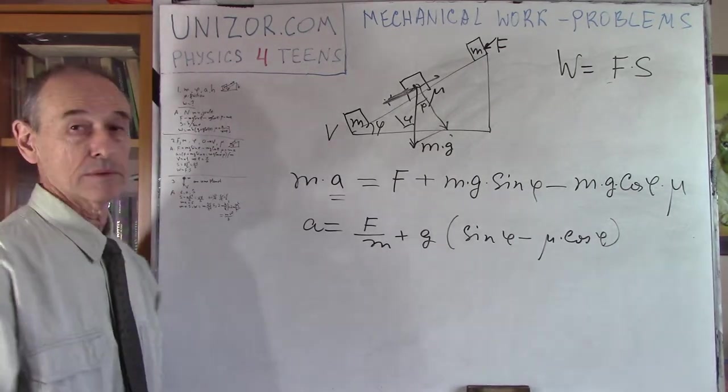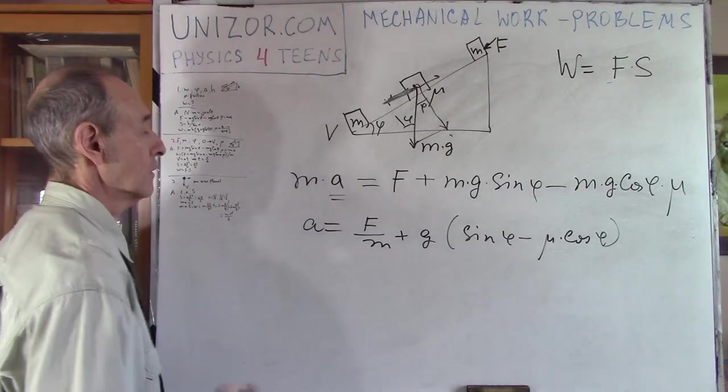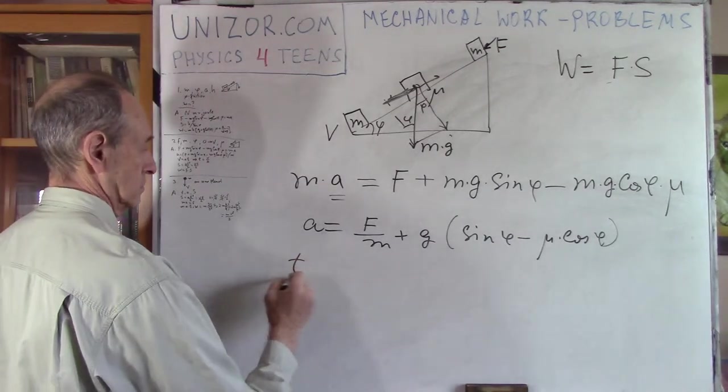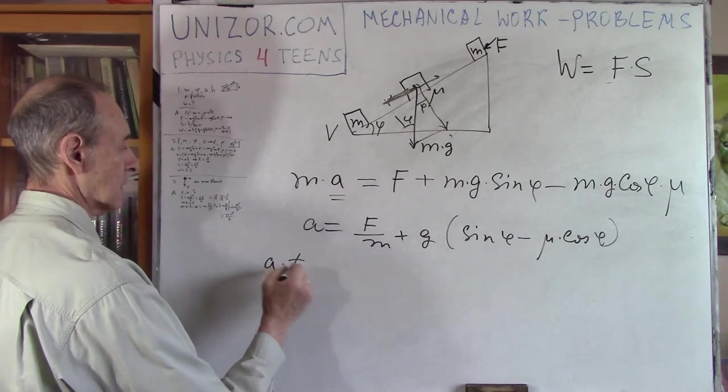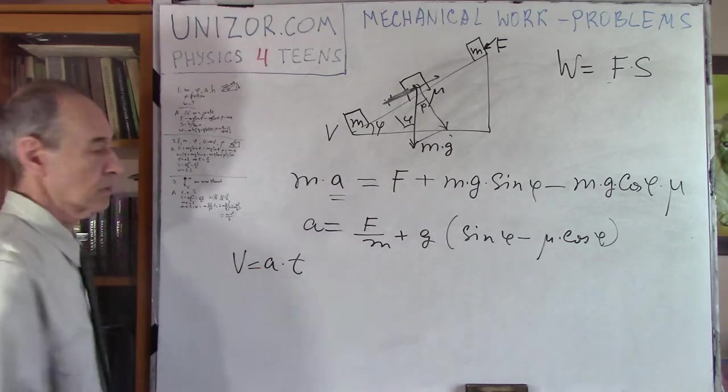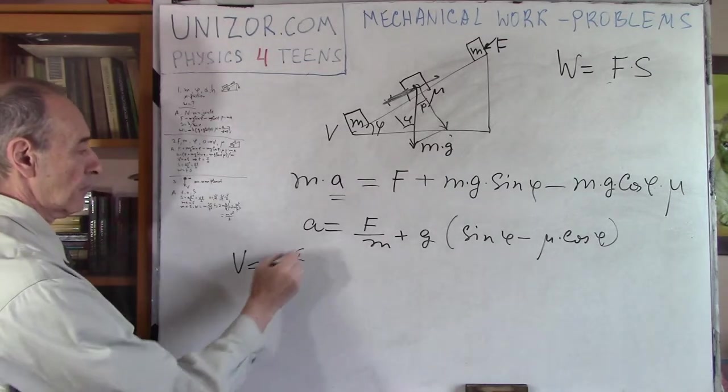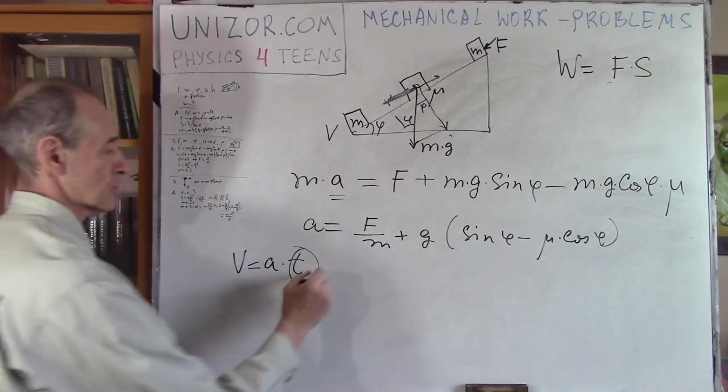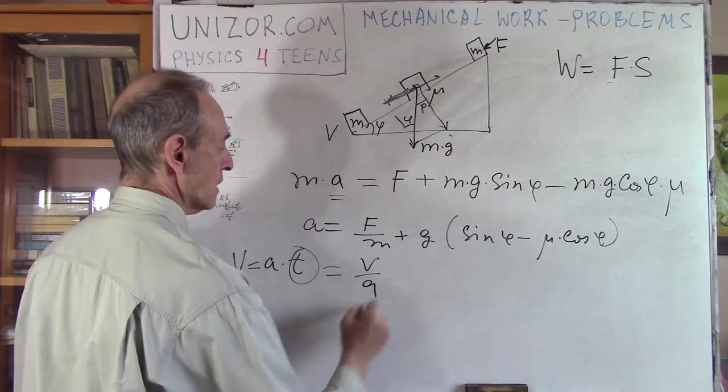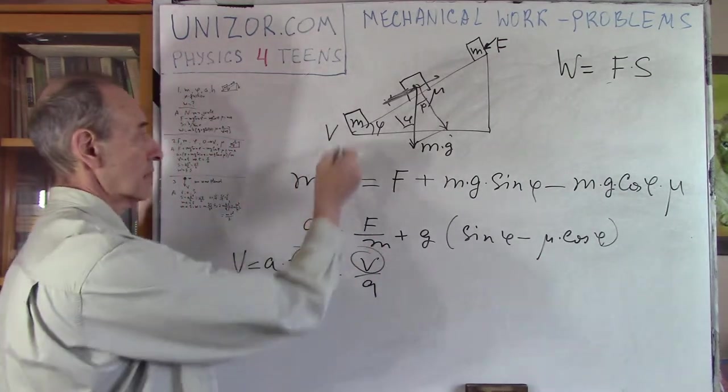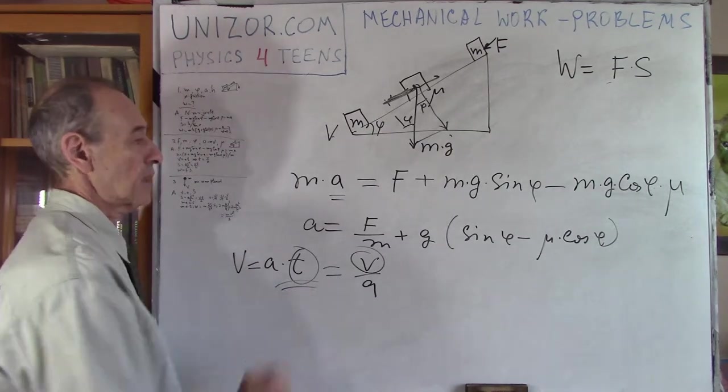Now, we know a, which is good. Now we can find out the time. Why? Because a times t is equal to final speed v. So, now we can find the time, which is equal to v divided by a. So, we know a, we know v, final speed. So that's how we find the time.